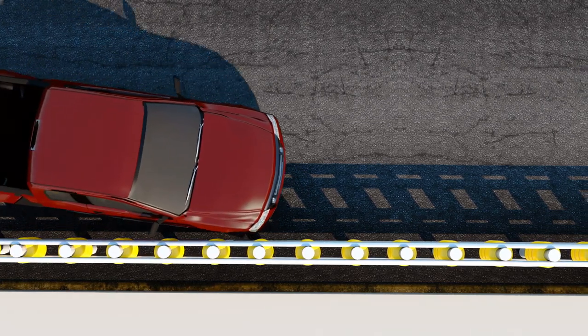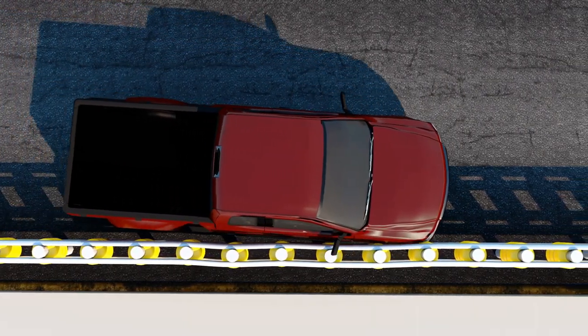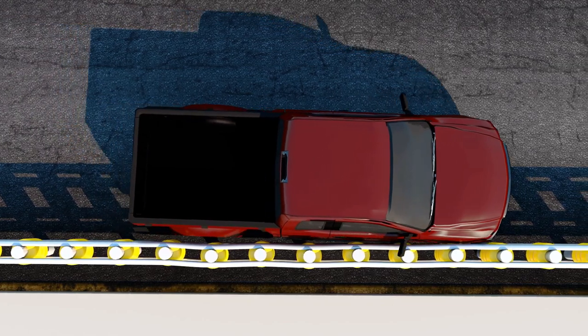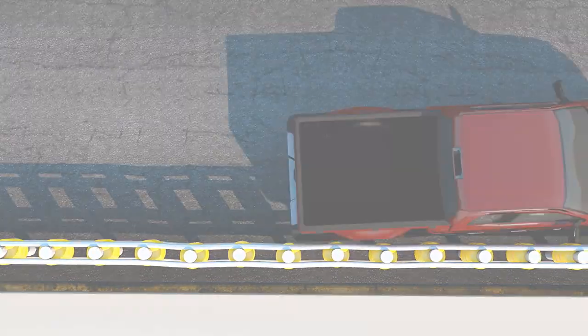The height of the impact energy-absorbing elements, upper and lower frames, allows various height vehicles to be redirected safely in the direction of travel.